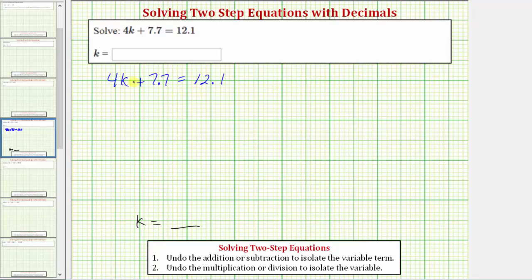Looking at the left side of the equation, in order to isolate k, we need to undo this multiplication as well as this addition. Because of this, this is often called a two-step equation. In order to solve a two-step equation, the first step is to undo the addition or subtraction, and the second step is to undo the multiplication or division.